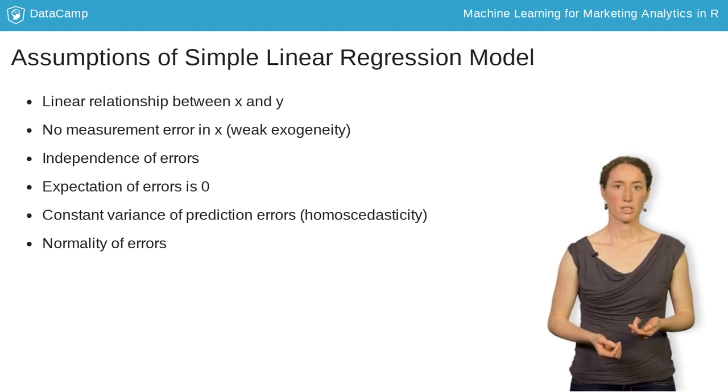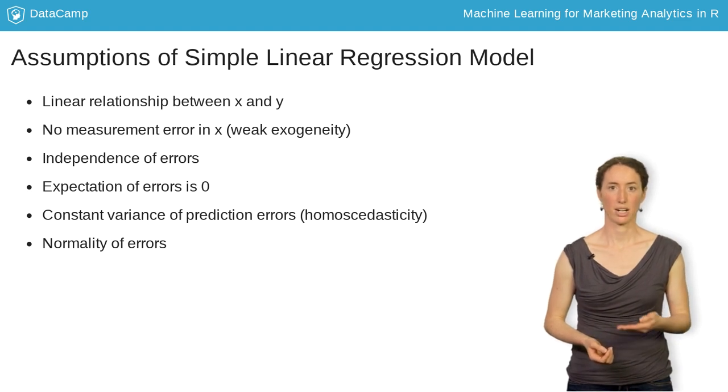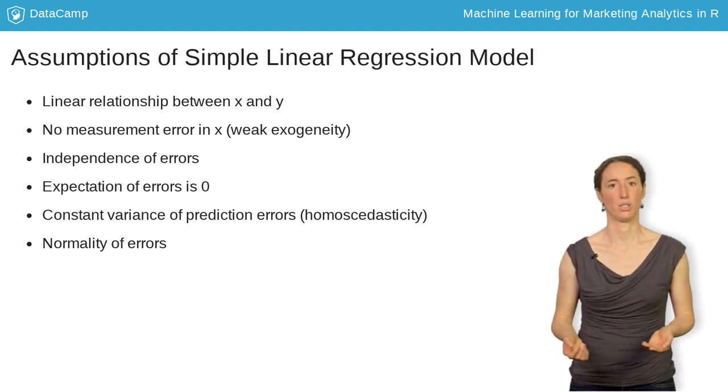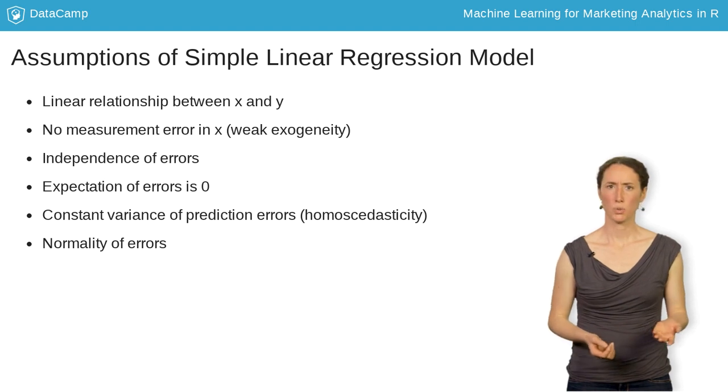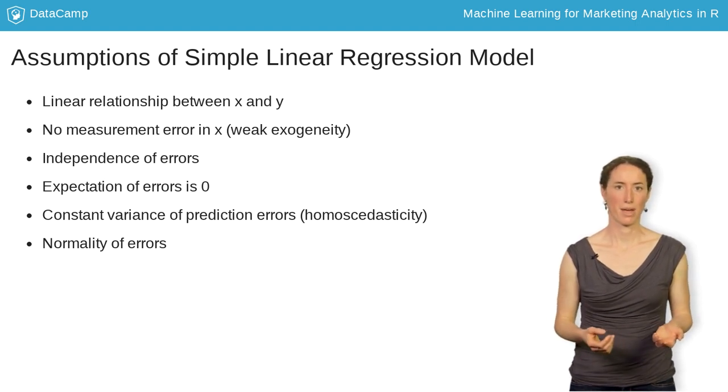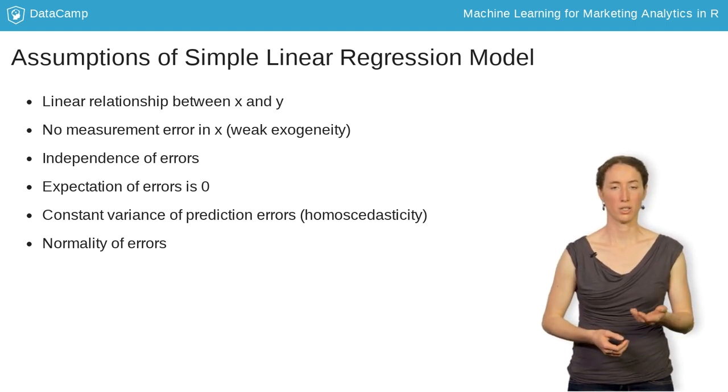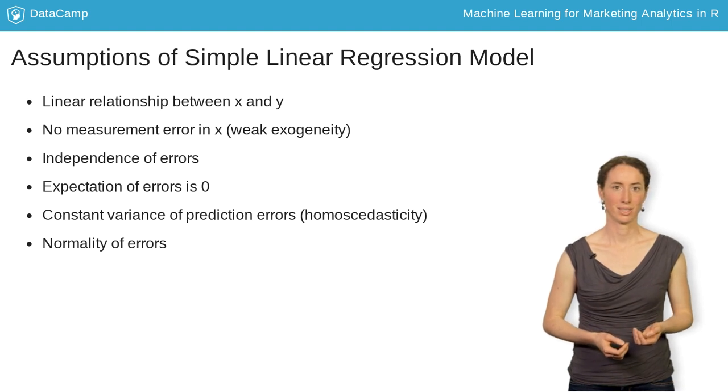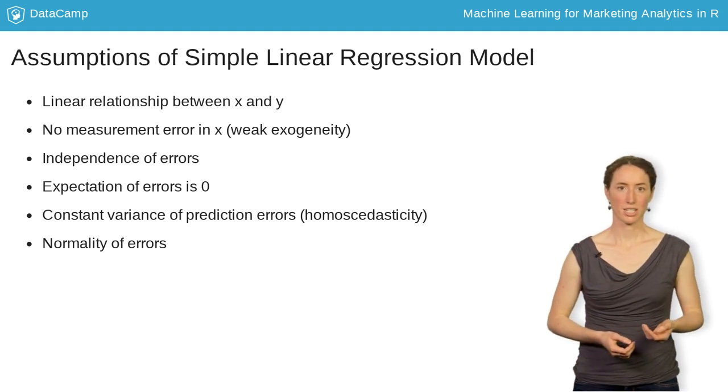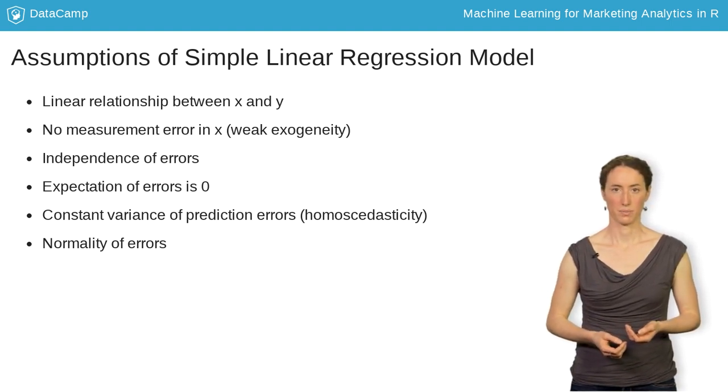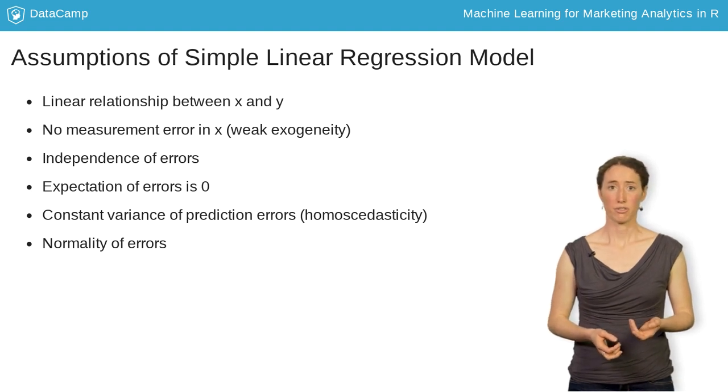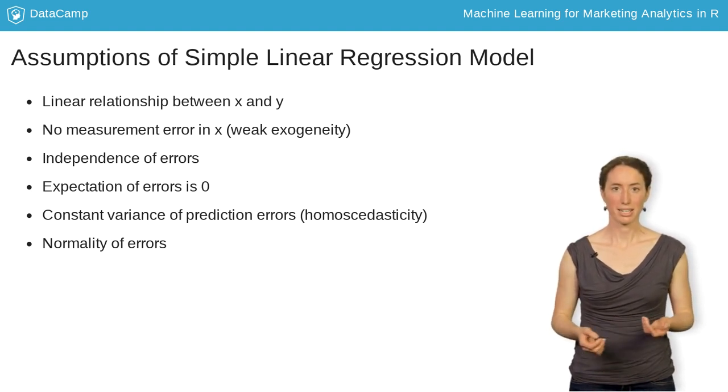The residuals should randomly vary around 0 and their expectation should be equal to 0. Usually, this assumption is not problematic as long as a constant is included in the model. The variance of the prediction error has to be constant. If not, inferences made from the model can be misleading.